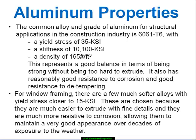6061-T6 is the common material stocked for structural purposes. It represents a good balance in terms of being strong without being excruciatingly hard to extrude. It also has reasonably good resistance to corrosion and resistance to deep tempering, which some of the higher-stress grades don't have. For window framing there are softer alloys with yield stresses closer to 15 ksi. These are chosen because they are much easier to extrude with fine details, and are much more resistant to corrosion, maintaining good appearance over decades of weather exposure.